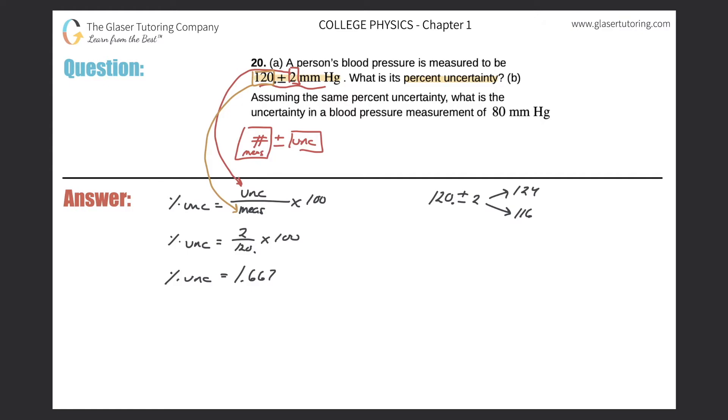But now recall, this number has the least number of sig figs. This number has only one sig fig. The number in the denominator has two. It doesn't have two. I added the decimal now. It has three. So therefore, my answer should only have one. So 1.667, we would have to round to a value of 2%. Okay, so that's the percent uncertainty for letter A.